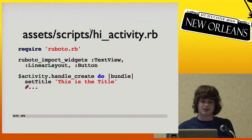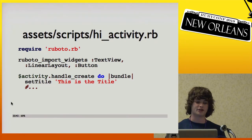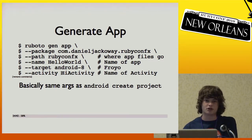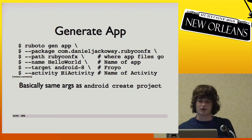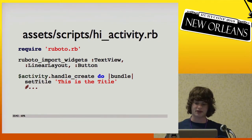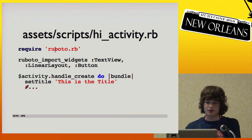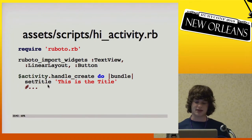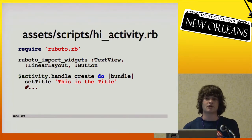It also gives you the assets/scripts folder where you'll be spending all your time. It gives you assets/scripts/ruboto.rb, which is the first thing you require because it makes everything after that work. I specified that I want the first activity from launch to be called HiActivity, so that's why it's hi_activity.rb. Going through the boilerplate: you require ruboto.rb and then ask for the view elements you're going to need. You put everything in your handleCreate method, and set_title sets the title bar at the top. The bundle parameter is what gets passed to onCreate and Ruboto passes that on to you.